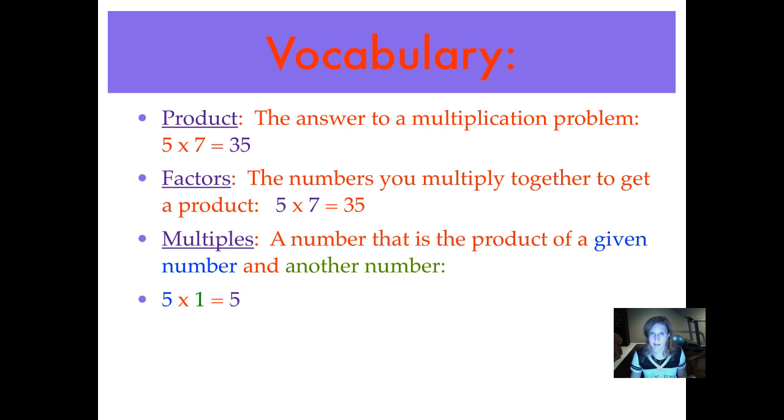With any number, whatever number is the given number, that is also the lowest multiple you will ever have. So the lowest multiple of 7 would be 7. The lowest multiple of 333 would be 333. Here's our second set of factors. 5 times 2, that's another number, equals 10. So 10 is a multiple of 5 as well.